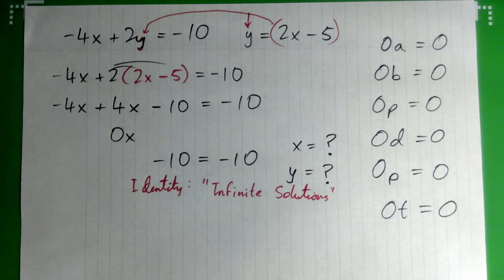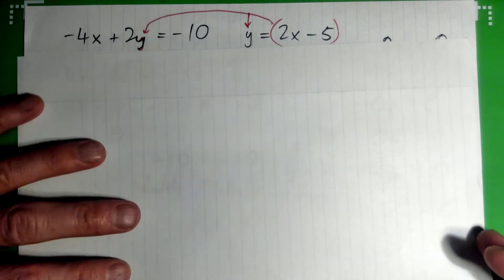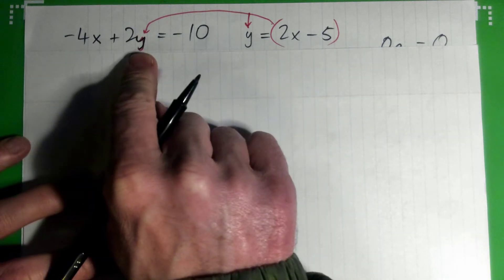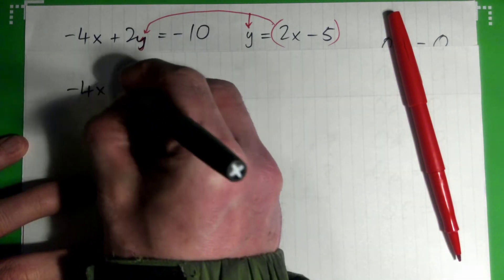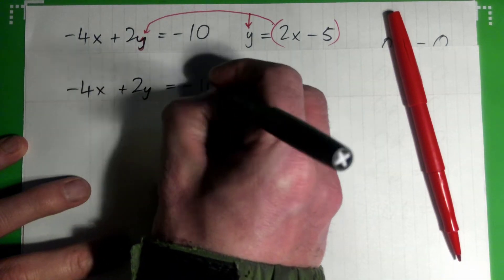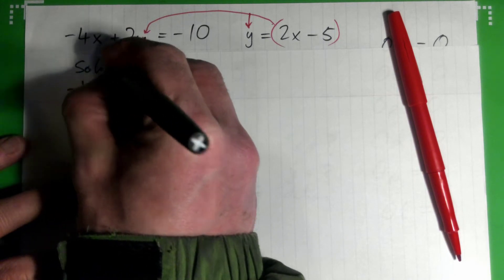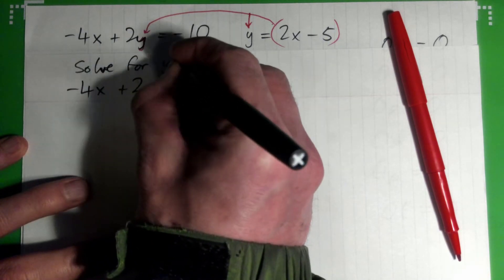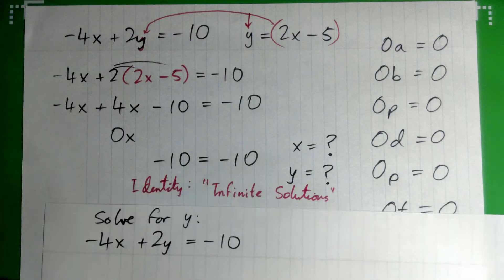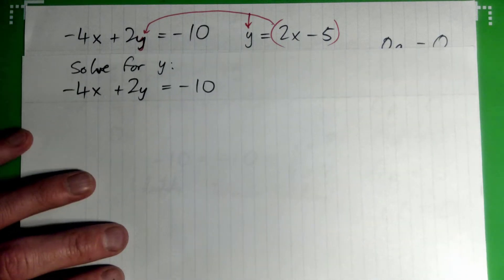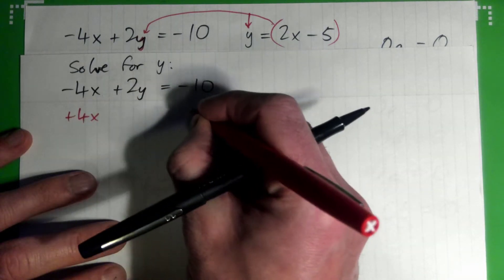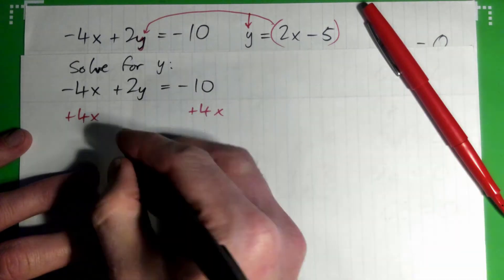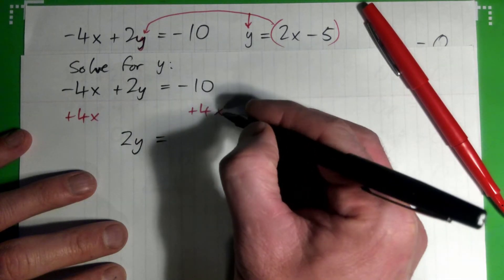You're supposed to recognize an identity and just say 'infinite solutions' — that's the answer. But we're also going to solve by graphing, and on your test I'll have you graph as well. So let's solve this equation for y: negative 4x plus 2y equals negative 10. Add 4x to both sides.